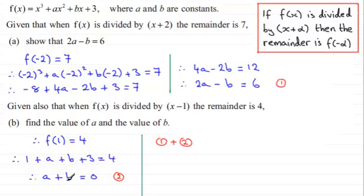So if we do 1 add 2, what we've got is 2a plus this a is 3a, and the b's are going to cancel, and then we get 6 plus 0 which is 6. And if we divide both sides by 3, then a is clearly 2.